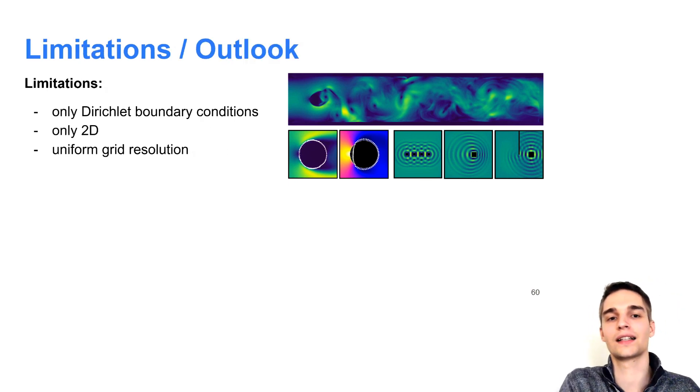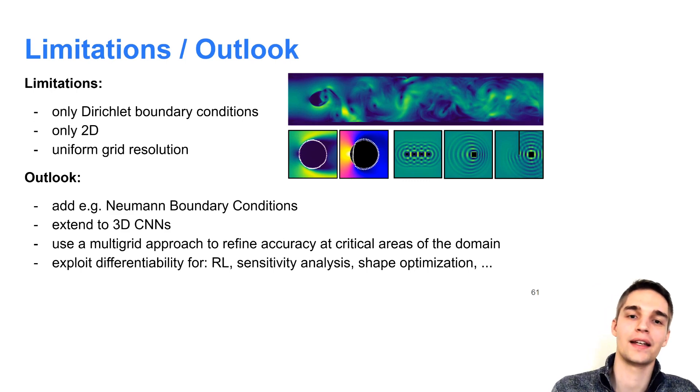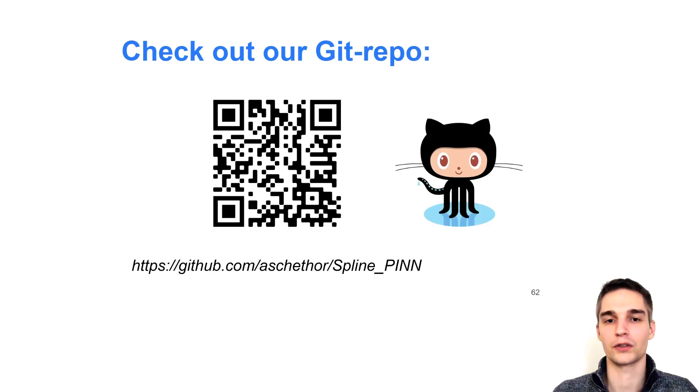However, our method still comes with some limitations. For example, here we only looked at Dirichlet boundary conditions and only considered two-dimensional flows. Furthermore, we used a uniform grid resolution. To compensate these limitations, one could also add Neumann boundary conditions or extend the PDE models to 3D convolutional neural networks. To refine the accuracy at critical areas of the domain, one could use a multigrid approach. And since the pipeline is fully differentiable, it might be also useful in reinforcement learning scenarios for sensitivity analysis or to do gradient-based shape optimization. For example, of wing profiles.